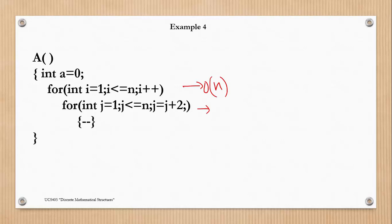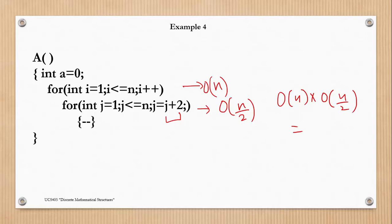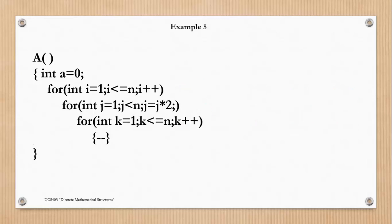Next we have an inner loop which is a nested loop, and its iteration count will be n/2 because we are incrementing j by 2 every time. So its complexity is O(n/2). The total complexity of the algorithm is O(n) × O(n/2), which equals O(n²) because we ignore the coefficient of the leading term.